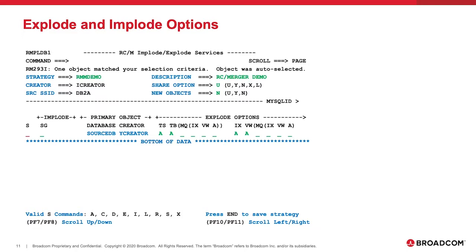In this case, we are going to explode objects below the database. This is a very simple example, so we can just choose to include tablespaces, tables, indexes and views. The letter A that we see here under those selected columns means that we want RCMerger to auto-build all related objects for us. We could put an S instead and we would then be able to choose which objects to include — for example, if we only wanted to migrate some of the tablespaces. Once done, we type end or PF3 and our strategy is saved and we're ready for the next phase of the process.